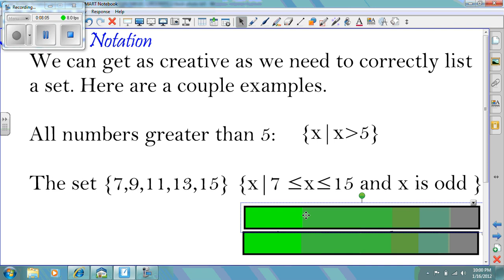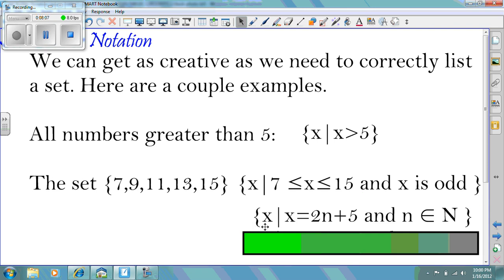Or we could say the set of all X, such that X equals 2N plus 5, and N is an element of the natural numbers. How do we get that set if we put N equals 1, which is the first natural number, 2 times 1 is 2, plus 5 gives us 7. Put in the second natural number, 2 times 2, which is 4, plus 5 gives us 9, and so on.